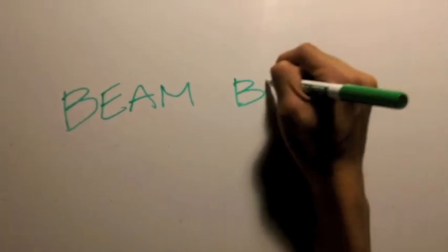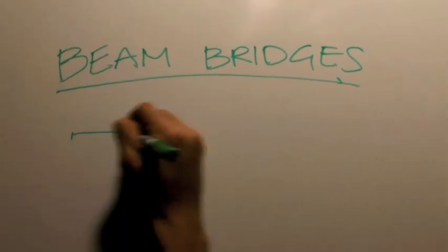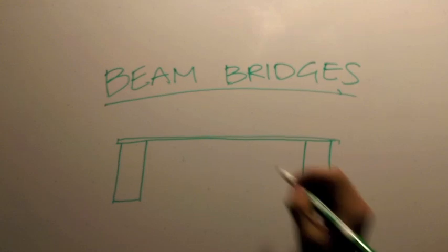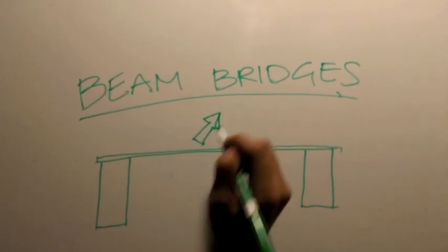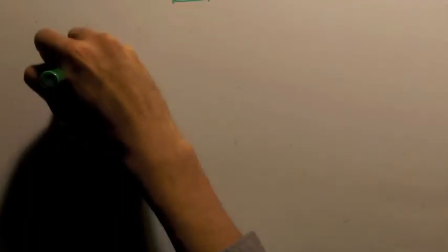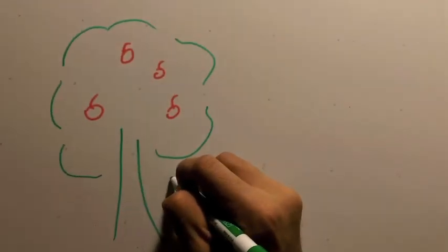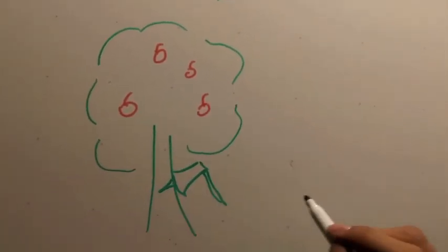Beam bridges are one type of bridge engineers and architects use. They are one of the simplest structural forms. All you need to construct a beam bridge is a rigid horizontal structure and two vertical supports, one on each end.